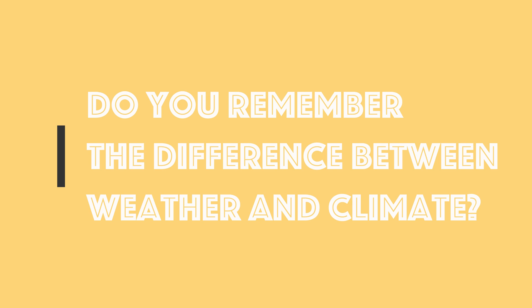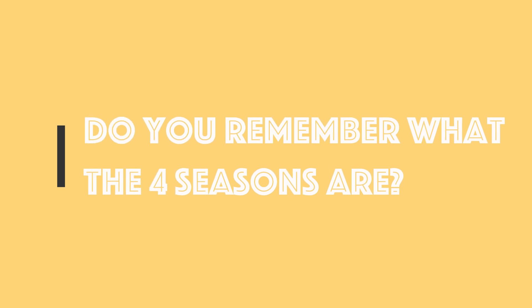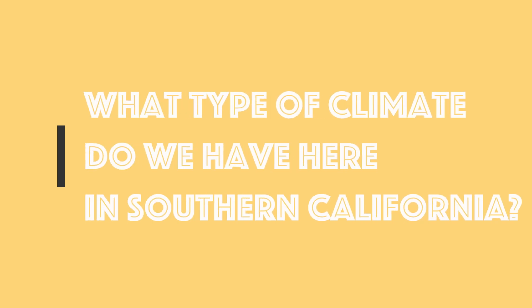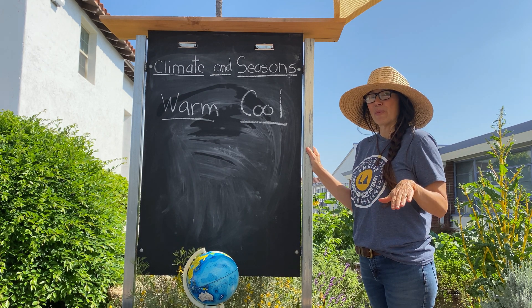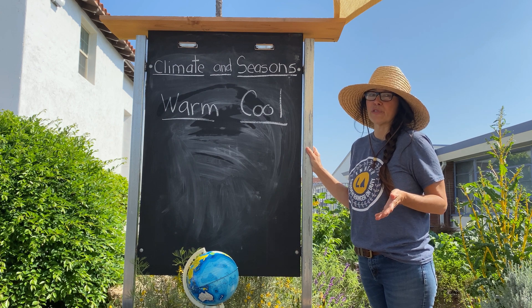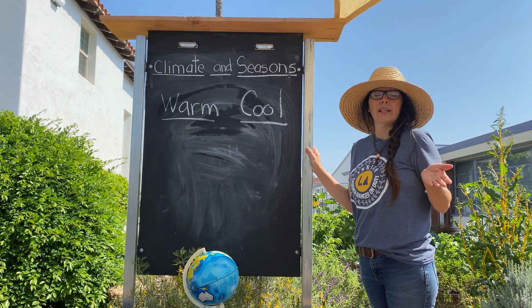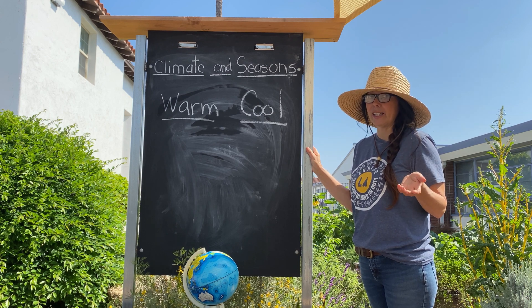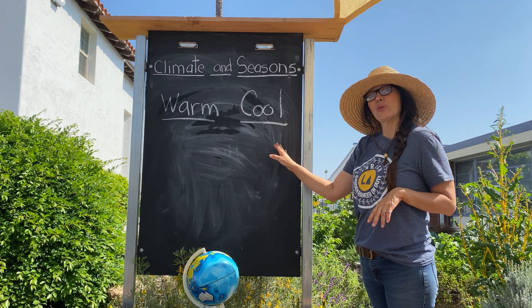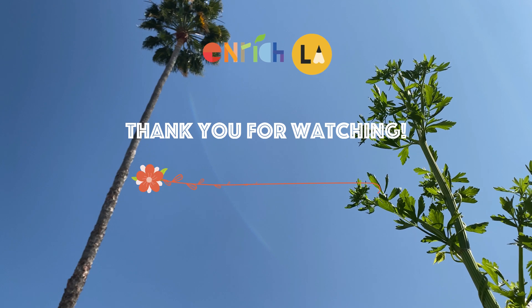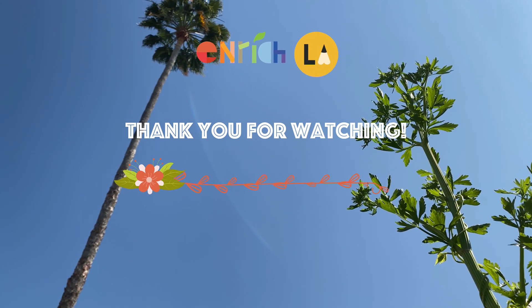Let's review now. I know we went through a lot of information. But the most important part I want you to learn from this lesson is that here in Southern California, in our Mediterranean climate, we have two growing seasons: a warm season and a cool season. Thank you for joining us and we'll see you in the next Enrich LA garden lesson.